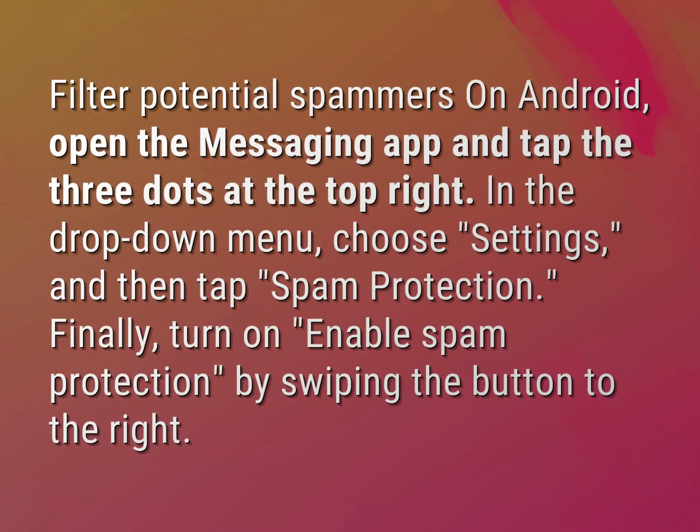To filter potential spammers on Android, open the messaging app and tap the three dots at the top right. In the drop-down menu, choose Settings and then tap Spam Protection. Finally, turn on Enable Spam Protection by swiping the button to the right.